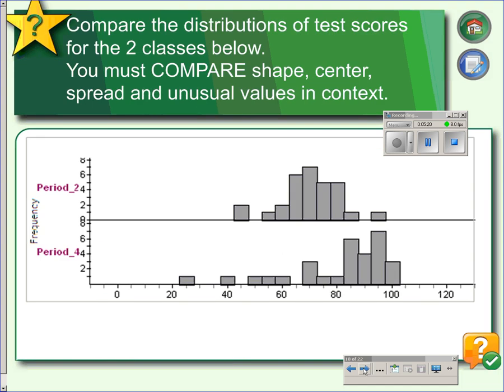So if we were to compare these two distributions, this top distribution we could say is approximately symmetric and unimodal. It has a couple of gaps right here. The median appears to be about 70, with an IQR of approximately 25-ish.